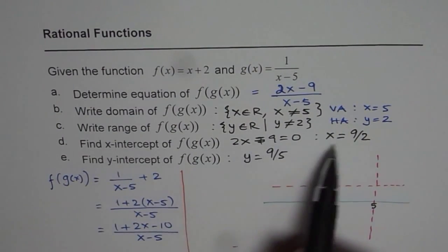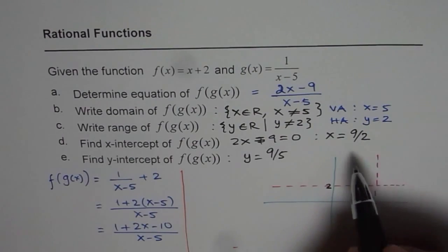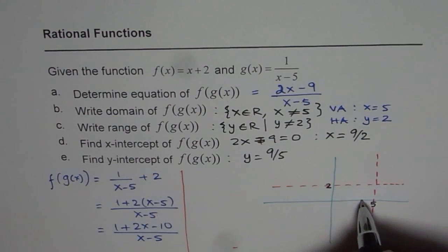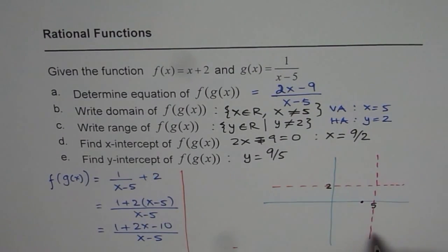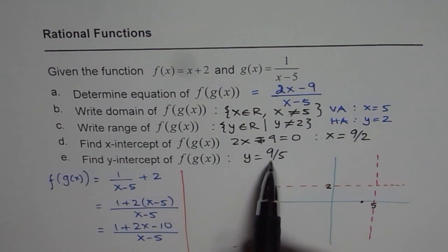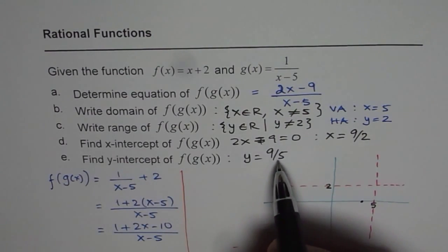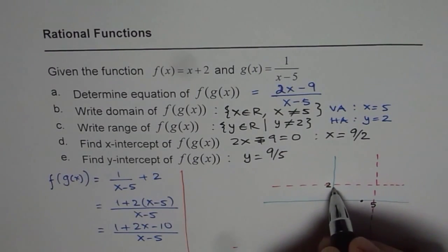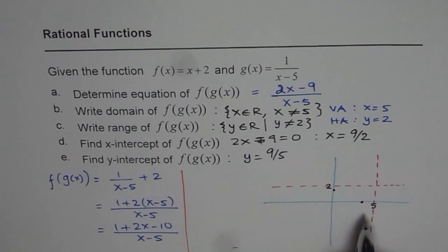Then we have x-intercept at 9 over 2, which is 4.5, kind of close to 5. Let us say here. And y-intercept is at 9 over 5. 9 over 5 is less than 2. So it is kind of here.